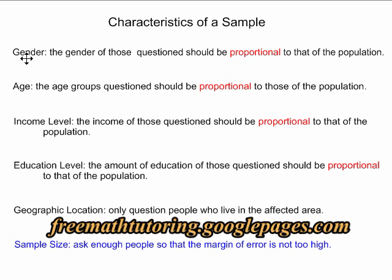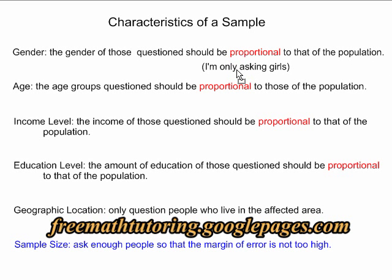The first characteristic is gender. The gender of those questioned in a survey should be proportional to that of the population. In this case, it's an all-girls school, so I'm only asking girls.